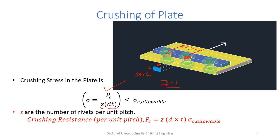The crushing stress — load divided by projected area divided by number of rivets sustaining it — should be less than or equal to the allowable crushing strength of the material. For the plate case, crushing resistance per unit pitch is: Pc = z · d · t · σc, where σc is the allowable crushing strength. This relation is used to measure crushing resistance to prevent failure of the plate under crushing.